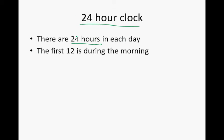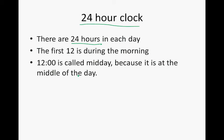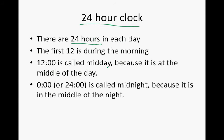So 1 o'clock is in the morning and then the second 12 is in the afternoon. So 12 o'clock is called midday because it is in the middle of the day. And then 0000 hours or 24 hours is called midnight because it is in the middle of the night.